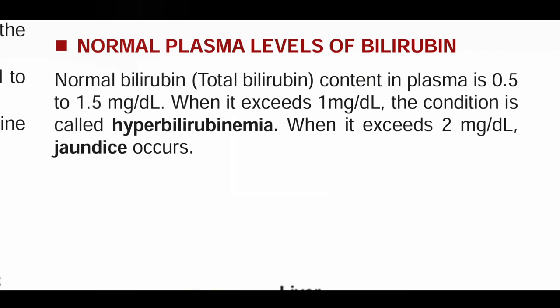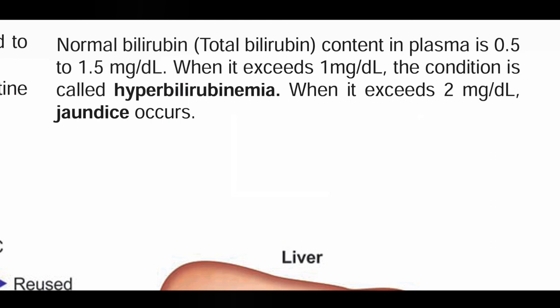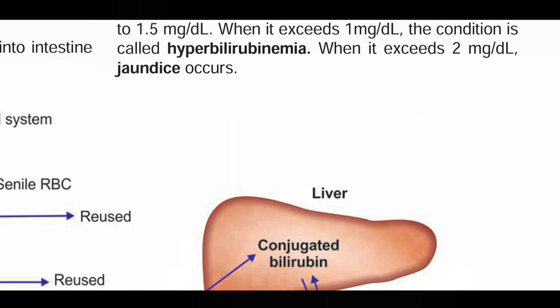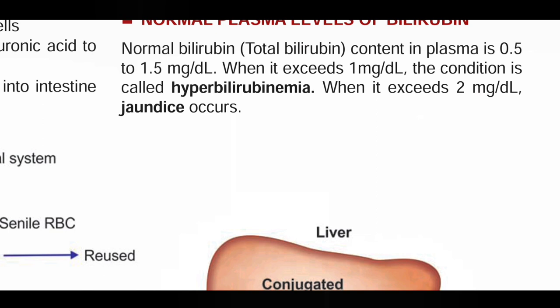Normal total bilirubin content in plasma is 0.5 to 1.5 mg per dL. When it exceeds 1 mg per dL, the condition is called hyperbilirubinemia. When it exceeds 2 mg per dL, the condition is called jaundice — a yellowish pigmentation of the skin.